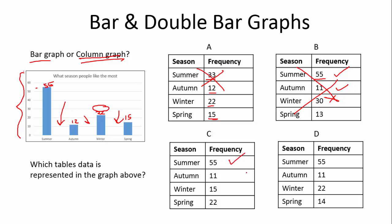For graph C: we have 55 again, 11 which we think could be right, but winter is 15. That can't be right - if winter were 15 it would be here, not going above that line to 20. And spring is 22, but we can see spring is below 20. So it's not this graph. Let's check graph D: summer is 55 - that looks about right; autumn is 11, that could be right; winter is 22, that looks about perfect; and spring is 14 and we get 15, so that looks about perfect. Our answer would be D.